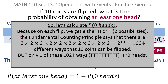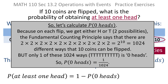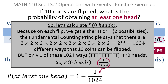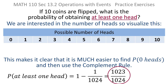But only one of those 1,024 ways comes out to be no heads, and that's when you get tail ten times in a row. So the probability of getting no heads is only 1 out of 1,024. Take that result and plug it in to the complement rule: the probability of at least one head is 1 minus 1 over 1,024. Writing 1 as 1,024 over 1,024 and subtracting 1, you get 1,023 over 1,024.